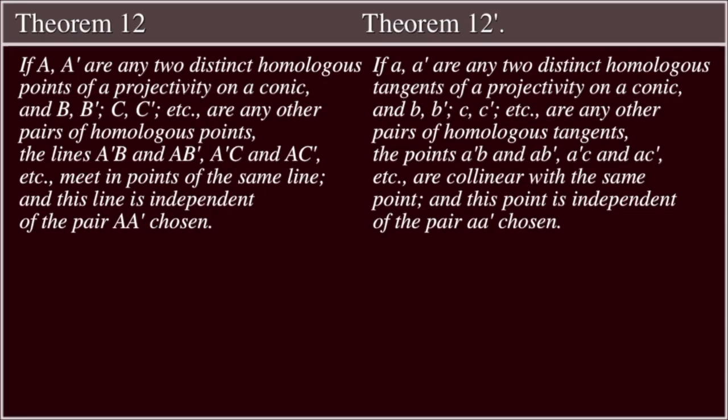Theorem 12': If a, a' are any two distinct homologous tangents of a projectivity on a conic, and b, b'; c, c'; etc. are any other pairs of homologous tangents, the points a'a, a'b and a'a', a'b', etc. are collinear with the same point, and this point is independent of the pair a, a' chosen.